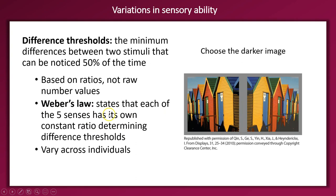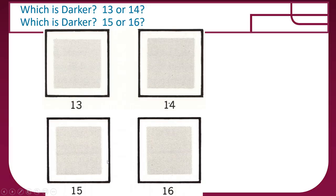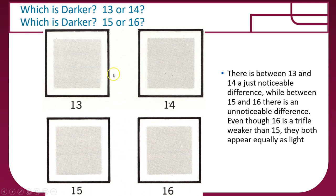Each of the five senses has its own ratio and ability to determine difference thresholds, and they vary across individuals. For example, there is a just noticeable difference between shades 13 and 14 — 14 is slightly darker — and between 15 and 16, where 15 is slightly darker. But they should appear equally the same to most people because the difference in color saturation is below our difference threshold.